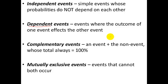One depends on the other. Third, complementary events: together they form a whole. An event plus its non-event means either it happens or it doesn't happen, and the total is always 100%. For example, the chance that it rains today and the chance that it doesn't rain today are complementary — their probabilities total 100% because either it's going to rain or it's not.